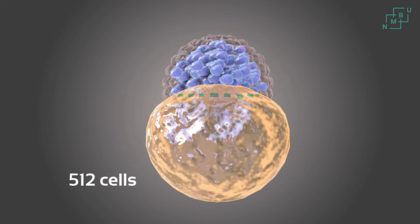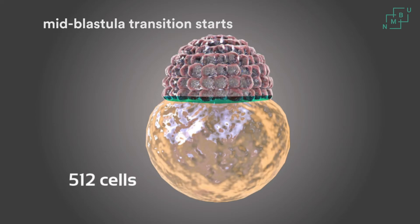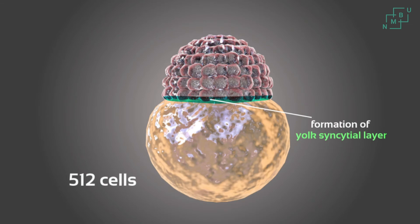At the 512-cell stage, with the 10th cell division, the mid-blastular transition starts, and formation of the yolk syncytial layer also starts. With the mid-blastular transition, the cell cycle lengthens and becomes asynchronous. Also, the deep cells become motile.